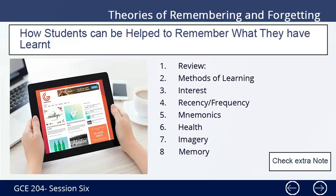Second: Methods of learning. Verbal and numerical materials are remembered much better if they are organized into categories or groups of some kind than if they are simply left in random order. Third: Interest. The intention to remember what is learned facilitates remembering, at least if interest is present before students learn.